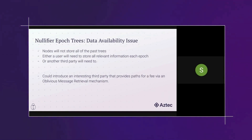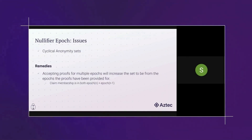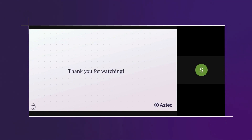There are ways to request previous paths, and potentially use oblivious message retrieval (OMR) so a server providing epoch data doesn't know what it's giving you — a very interesting area of private information retrieval research. Another slight issue is that each note is tied to a nullifier tree epoch, which slightly reduces anonymity set size. You could allow claiming membership in a range of epochs to dilute this, but if epochs are sufficiently large it's not a major concern. And that's everything you need to know about trees — thank you.